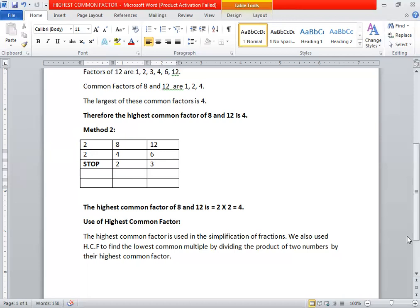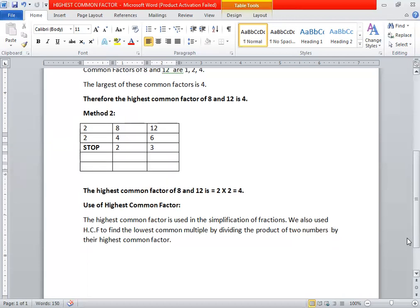Use of highest common factor: Actually, highest common factor is used in the simplification of fractions where we divide both the numbers, numerator and denominator, by the highest common factor to simplify the fraction. Furthermore, when we find the LCM, we can also find it by using HCF. What we do is multiply two numbers and divide the product by HCF, then you will get LCM.